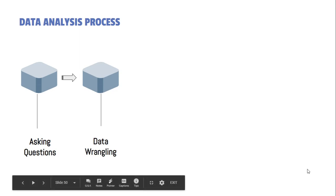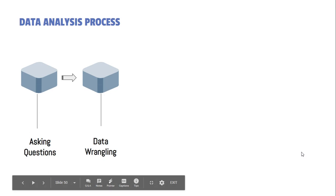Some people also call it data munging, or in simplified terms you can call it data pre-processing. What happens is — and you already know this — the data you get is not always in the right format; it may have mistakes and errors. You cannot directly process that kind of data.